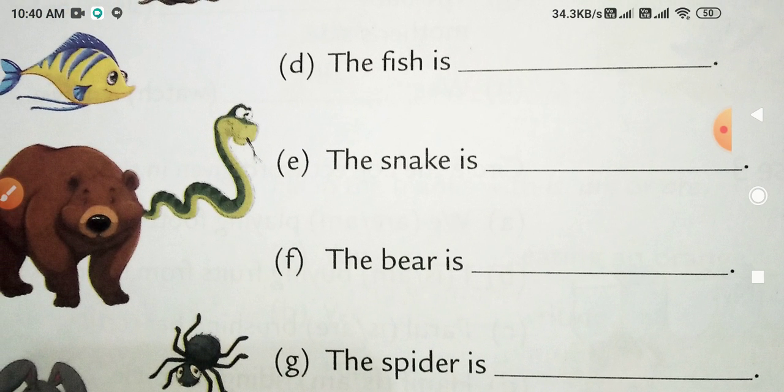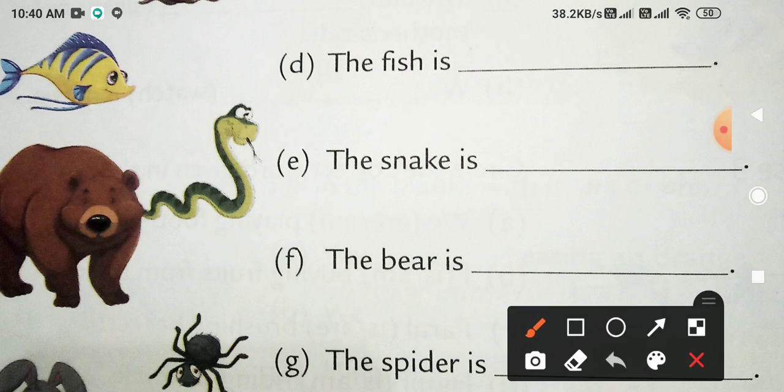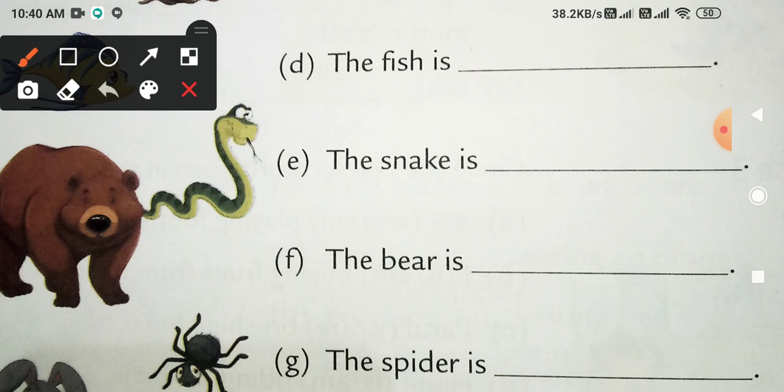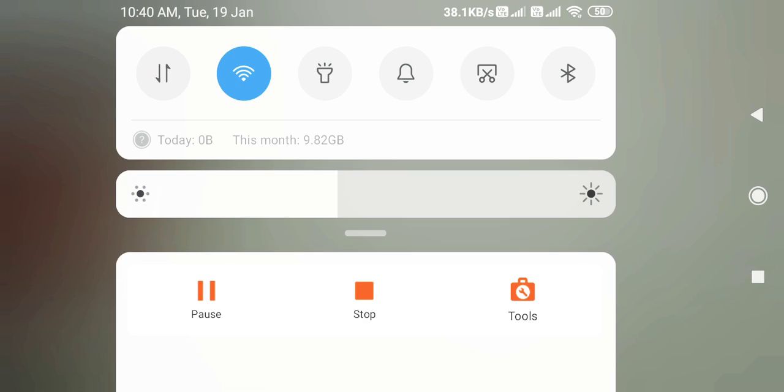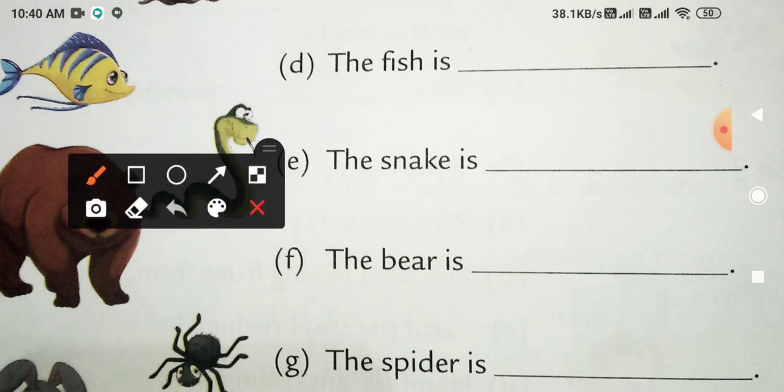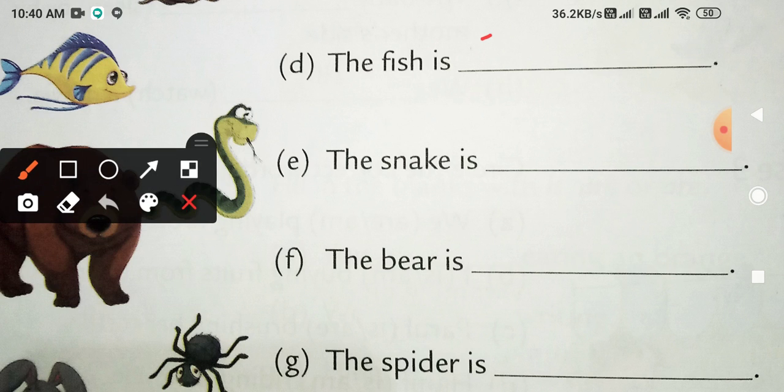Next is the fish. Fish, snake, bear, and spider. The fish is swim, swimming. That means what is it doing? Your fish, look at it carefully, it is swimming. So here you will write swimming, S-W-I-M-M-I-N-G, swimming.